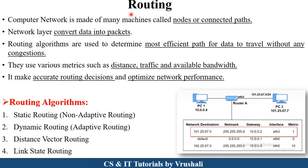The first point is: what exactly is routing? As we discussed earlier, in a computer network multiple devices are present and all the devices are connected with each other. These devices share information with each other. In the network layer there are routing algorithms. Routing algorithms find out the efficient path to travel information from source to destination accurately. They find out the path on the basis of distance, traffic, and available bandwidth, and they optimize the network performance.